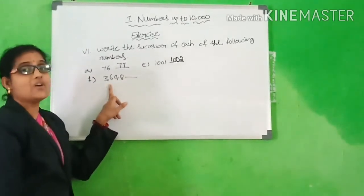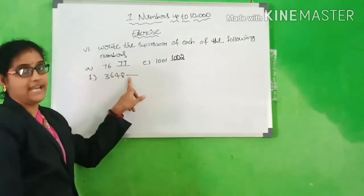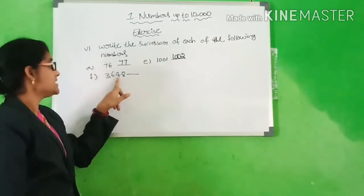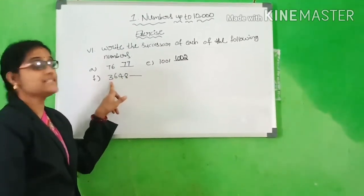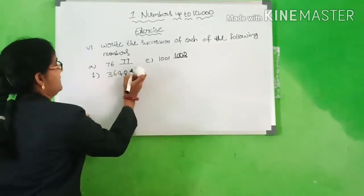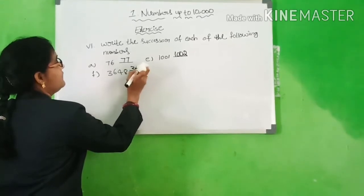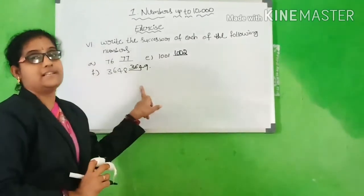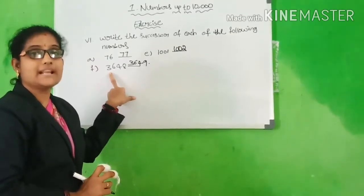Next: 3648. What is the number here? 3648. What is the successor of 3648? 3649. Okay, children?